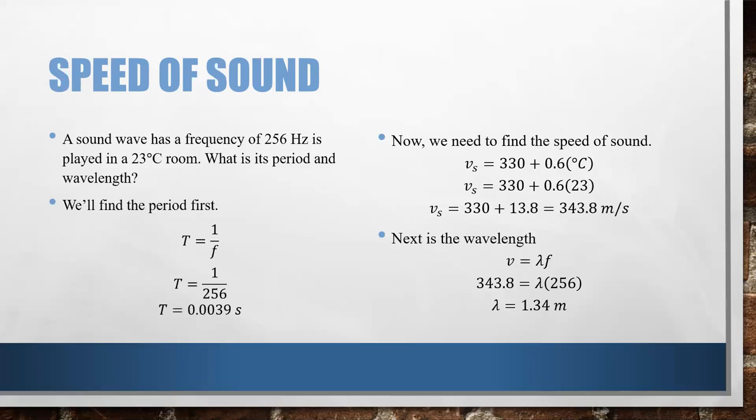That means it takes 0.0039 seconds for one wave to pass. Now that I've got that, I want to go ahead and figure out the speed of sound in air at that temperature. Well, I know the temperature is 23 degrees Celsius. And so, I'll multiply that by 0.6 and add 330 to it. I get the velocity of sound at that temperature to be 343.8 meters per second. Now that I know the velocity, I can use the wave equation because I know velocity and frequency. Velocity is 343.8, frequency is 256, divide and I get a wavelength of 1.34 meters.